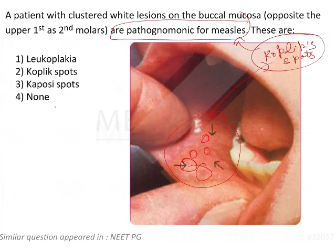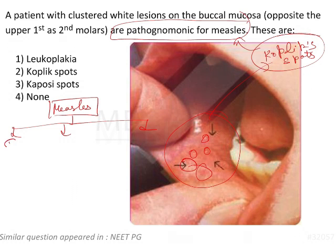We will be discussing measles in detail. There are three clinical phases for measles: the incubation period, the prodromal phase, and the pathological phase — the final stage of the disease.